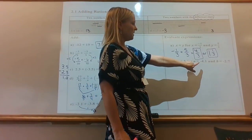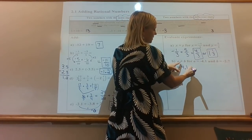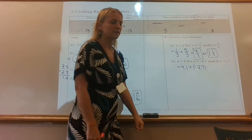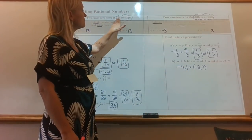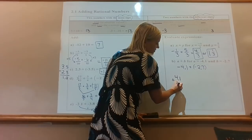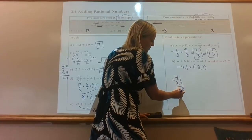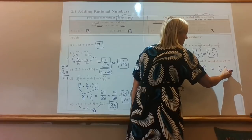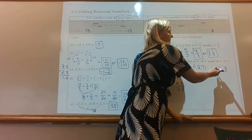Last question: A plus B, where A is negative 4.1 and B is negative 2.7. We're adding decimals, and both are negative — the same sign — so we add them together. Line up the decimals: 4.1 plus 2.7. One plus 7 is 8, four plus 2 is 6, bring the decimal down — that gives 6.8. Then check the sign: when they're the same sign we keep the sign. Both were negative, so the answer is negative 6.8.